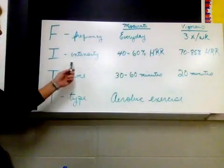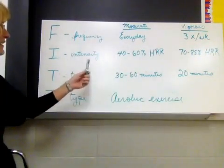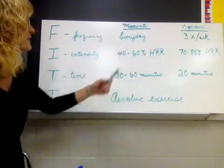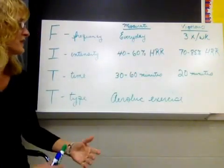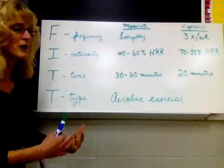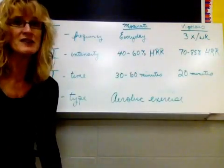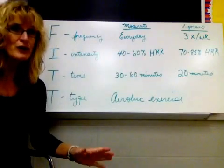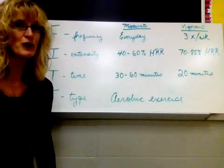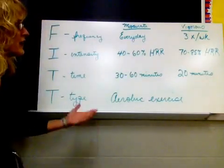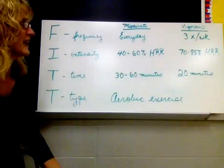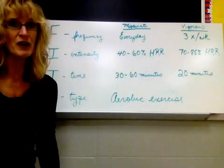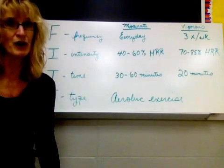The I in FIT stands for intensity. Moderate intensity activity is represented by approximately 40 to 60% of your heart rate reserve. You'll understand what heart rate reserve is shortly. Vigorous intensity exercise is 70 to 85% of heart rate reserve.